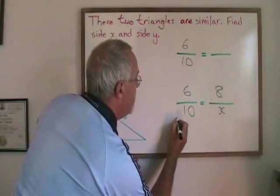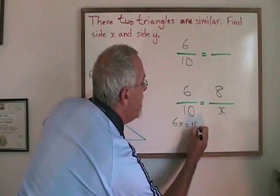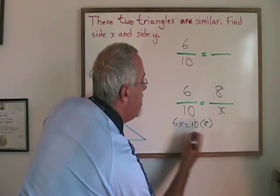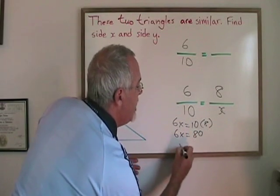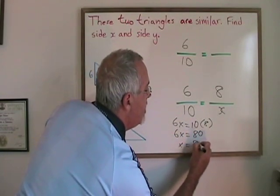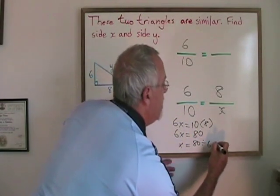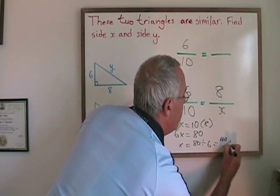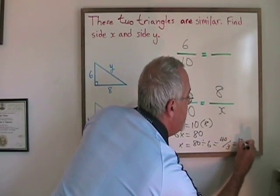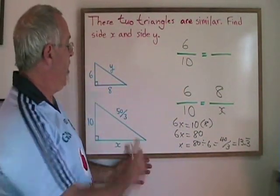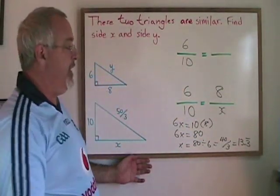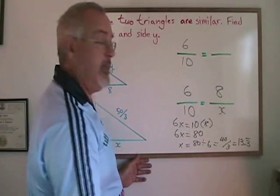Cross multiplying I get 6x equals 10 times 8 which means 6x equals 80. x is therefore equal to 80 divided by 6 which is 40 thirds or 13.3 repeating. There are no units given in the situation, so I can use the word units as my unit.